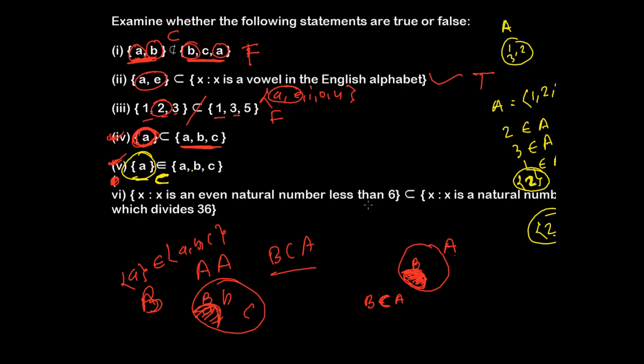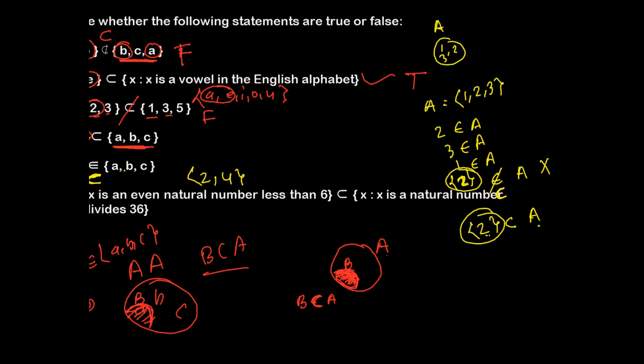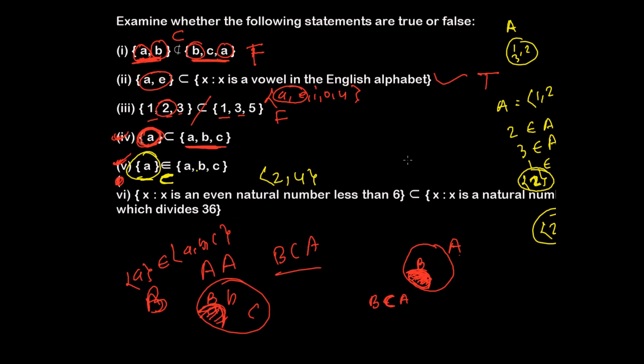And the sixth one is here. X is an even natural number less than 6. So even natural number less than 6. So it will be the first natural number and even that is 2. And the second one is 4. So we have 2 and 4. And the second question is saying X is a natural number which divides 36. So all the natural numbers that divides 36. Let's check which are the subset. So that is 1 can divide 36, 2 can divide 36, 3 can divide 36, and similarly 4 can divide, 6 can divide, 9 can divide, 12 can divide, 18 can divide, and 36 itself can divide the 36.